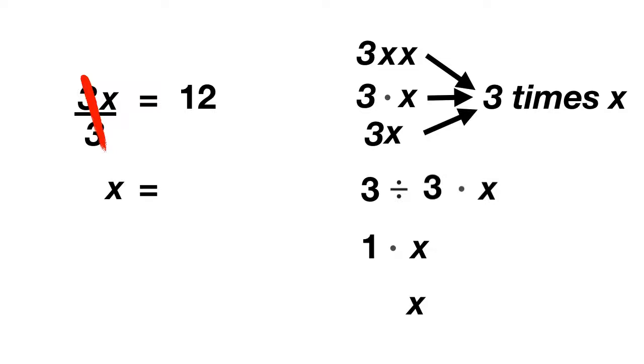But remember, when we do something to one side of an equation, we have to do it to the other side. So if we're going to divide the left side by 3, we have to divide the 12 by 3. Well, what is 12 divided by 3? 12 divided by 3 is 4, and so in this equation, x equals 4.